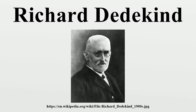While teaching calculus for the first time at the Polytechnic School, Dedekind developed the notion now known as a Dedekind cut, now a standard definition of the real numbers. The idea of a cut is that an irrational number divides the rational numbers into two classes, with all the numbers of one class being strictly greater than all the numbers of the other class. For example, the square root of 2 defines all the negative numbers and the numbers whose squares are less than 2 into the lesser class, and the positive numbers whose squares are greater than 2 into the greater class. Every location on the number line continuum contains either a rational or an irrational number. Thus there are no empty locations, gaps, or discontinuities.